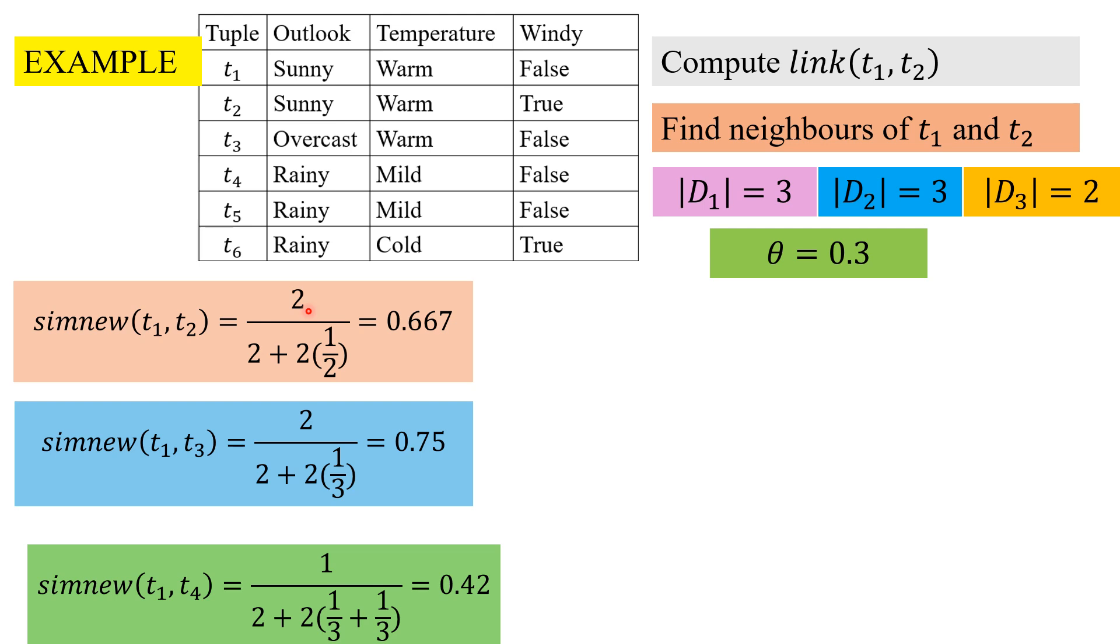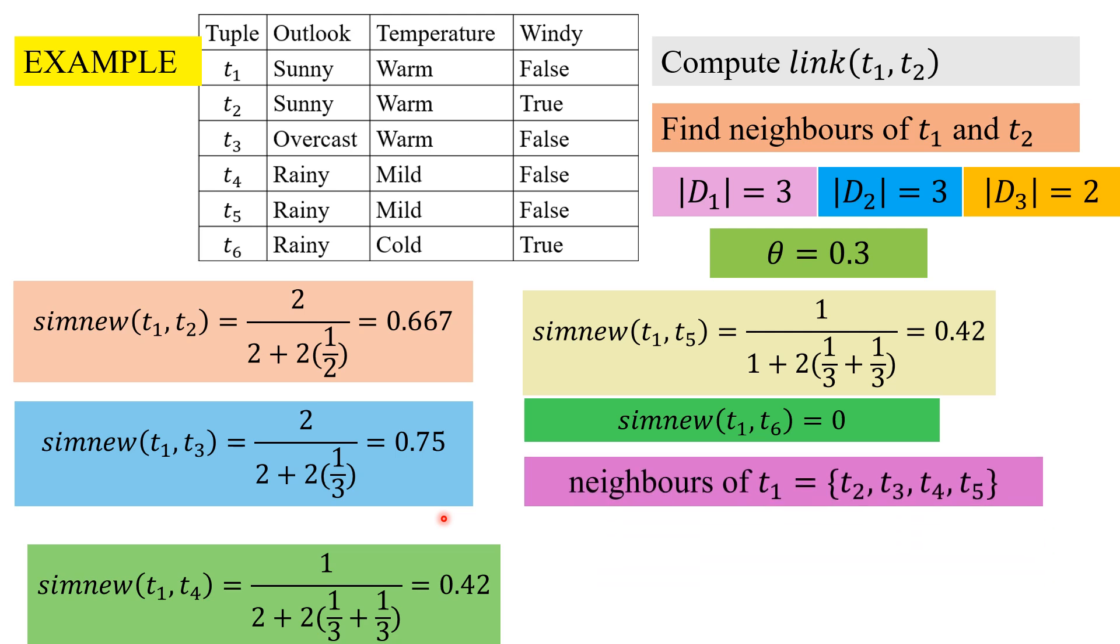Ti intersection tj is 2, and this is twice of 1 by domain of windy which is 2. We get the value of 0.667, and similarly we compute the rest of the similarities. The neighbors of t1 are, since the theta was 0.3, all t2, t3, t4, t5 are neighbors.